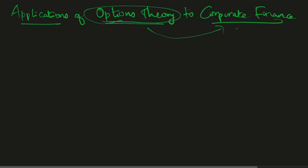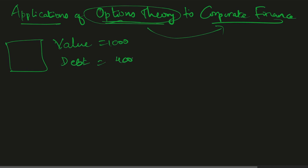This topic is all about connecting options terminology to corporate finance. Corporate finance is about the structure of your company — how the value of your company and its debt can be compared with options theory. Let's learn this with an example: imagine there is a company whose value is 1000 and there is debt of 400 within the company.